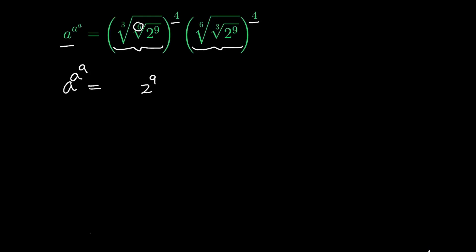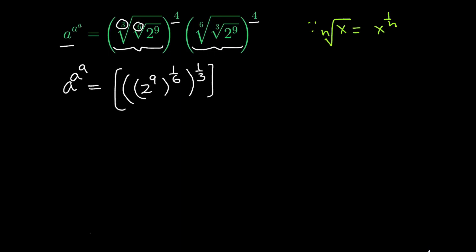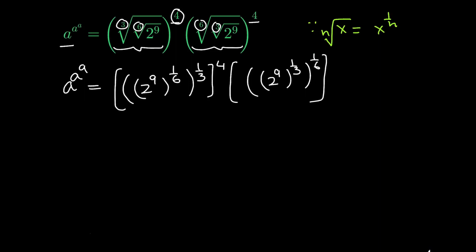This sixth root can be written as 1 over 6, and this cube root can be written as 1 over 3. Because we know that the nth root of x can be written as x raised to the power 1 over n. So, whole raised to the power 4, times 2 raised to the power 9. This cube root can be written as 1 over 3, and this sixth root can be written as 1 over 6, whole raised to the power 4.